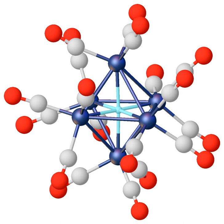Protide, deuteride, and tritide are used to describe ions or compounds which contain enriched hydrogen-1, deuterium, or tritium, respectively. In the classic meaning, hydride refers to any compound hydrogen forms with other elements, ranging over groups 1 to 16, the binary compounds of hydrogen. The following is a list of the nomenclature for the hydride derivatives of main group compounds according to this definition.